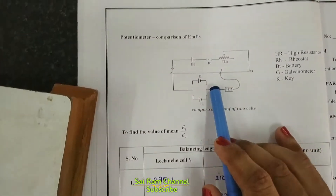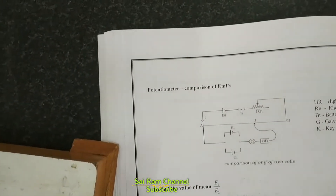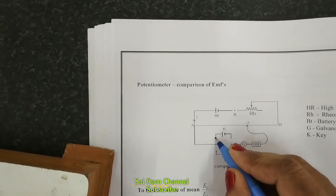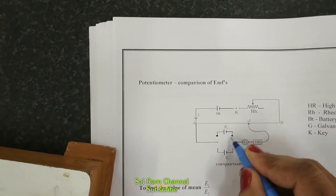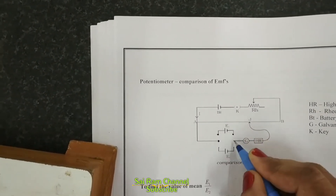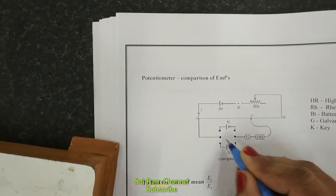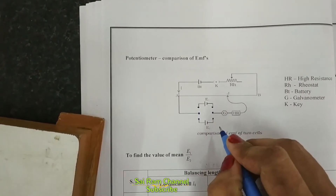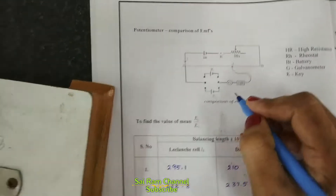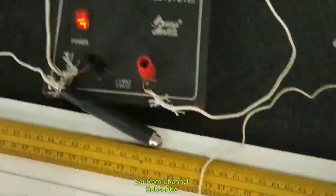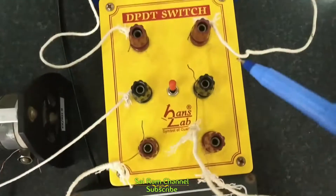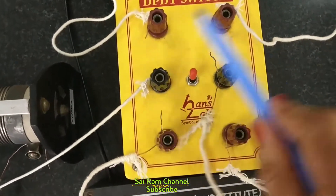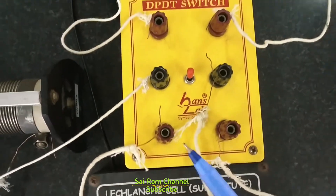That's the circuit. This potentiometer has 6 terminals. This is the DPDT switch — Double Pole Double Throw switch — with 6 terminals.